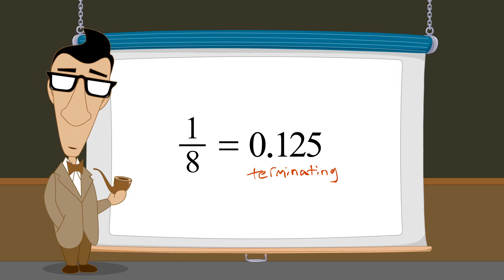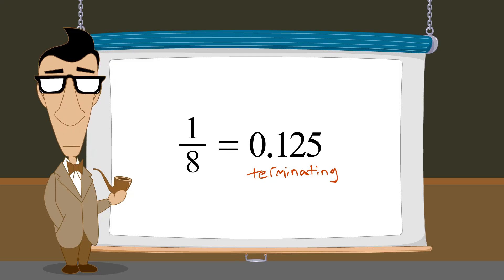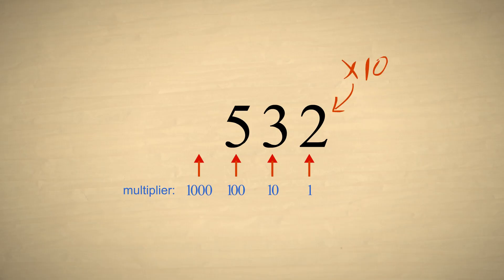In this lecture, we will see how to convert any terminating decimal number back into a fraction. Remember that each digit in a decimal number represents a value ten times that of the digit to its right. Now if we take any decimal number and multiply it by ten, each digit is shifted one column to the left.